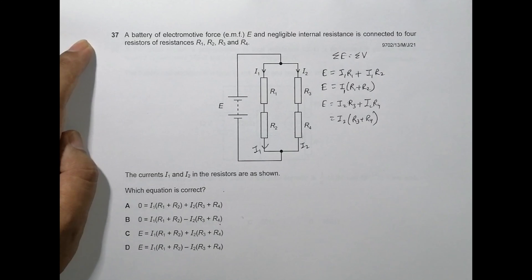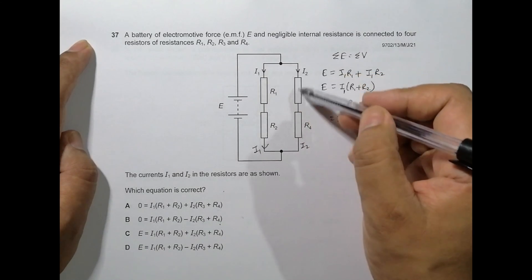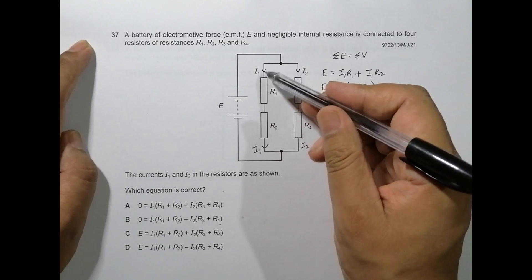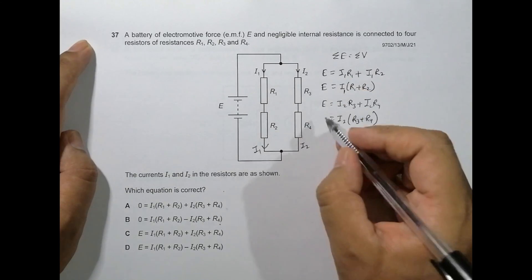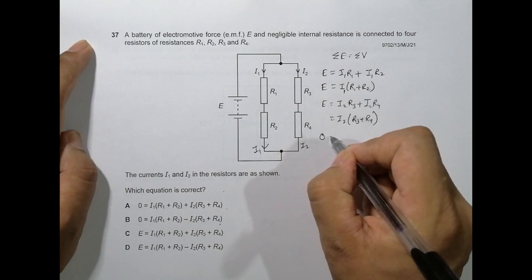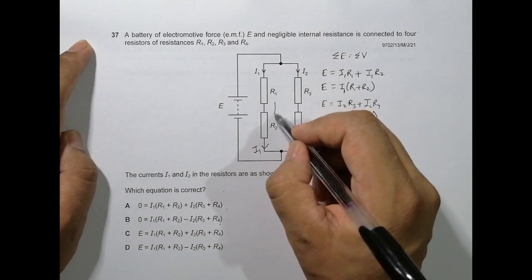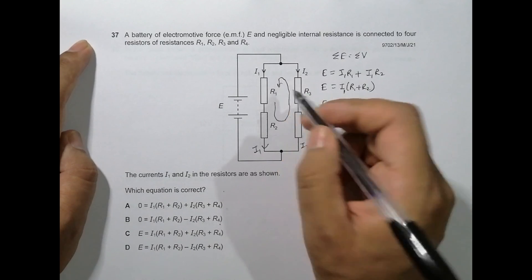Now the next closed circuit is this one. This is one closed loop. In this closed loop, the source of emf is zero. So zero equals - let me go like this, let me go along this path. If I go along this path, I have...